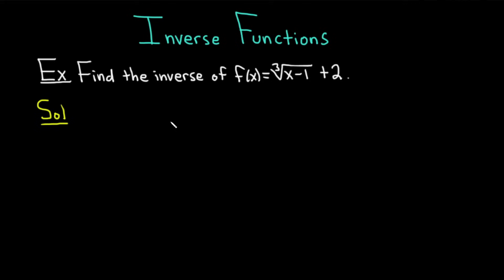So the first step when you're finding the inverse of a function is to replace your function f of x with y. So step one, instead of writing f of x, we just write y. So we get y equals the cube root of x minus 1, and then we have the plus 2. So again, step one, just replace your f of x with y.